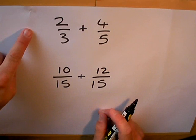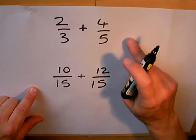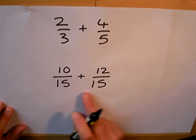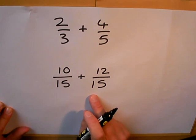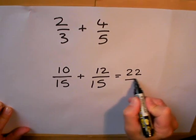Remember, 2 thirds is exactly the same as 10 fifteenths and 4 fifths is exactly the same as 12 fifteenths, but now these are the same type of fraction. They're both fifteenths, so I can add them together. 10 fifteenths and 12 fifteenths makes 22 fifteenths.